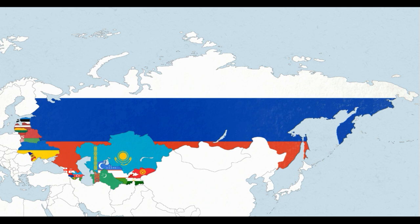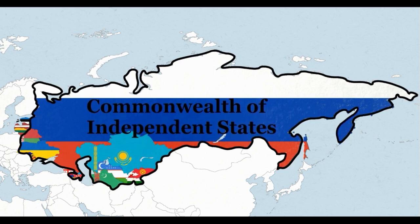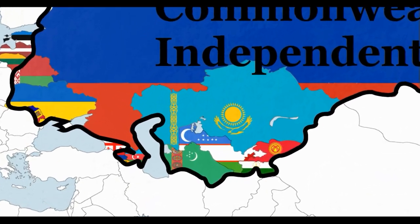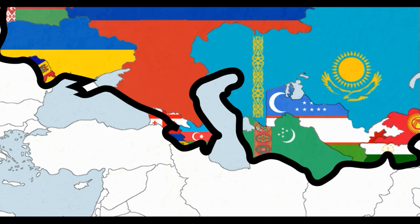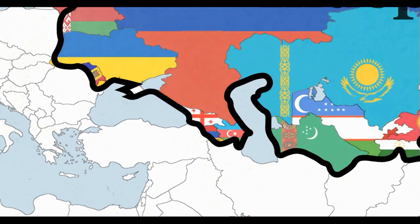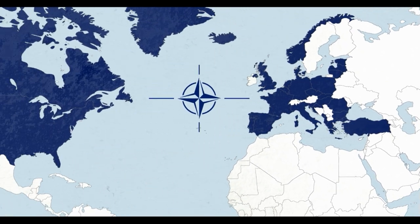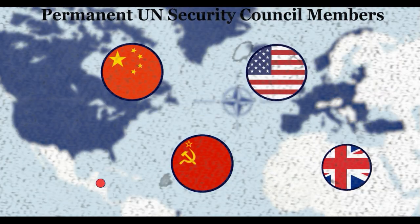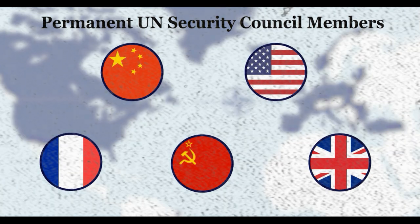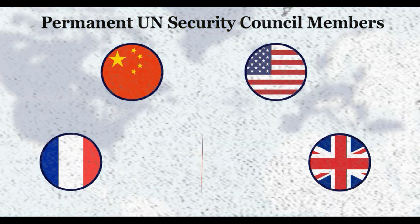On December 21st, all of the remaining republics except for Georgia signed the Alma-Ata Protocols, which created the Commonwealth of Independent States and saw all the republics formally leave the Soviet Union. Georgia already considered itself de jure independent but would join the CIS two years later. The three Baltic states didn't join and instead opened up relations with the West to eventually join the EU and NATO. On December 24th, the new Russian Federation announced to the United Nations that it was the successor to the Soviet Union and was granted its old permanent seat on the UN Security Council. The next day, Gorbachev resigned as president and declared the Soviet Union officially dissolved.